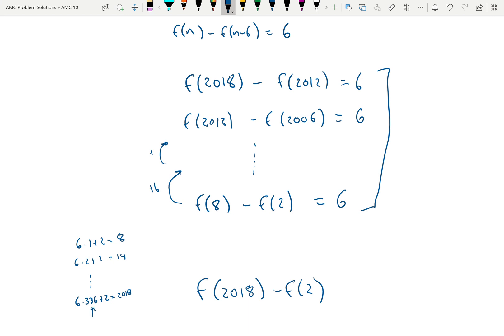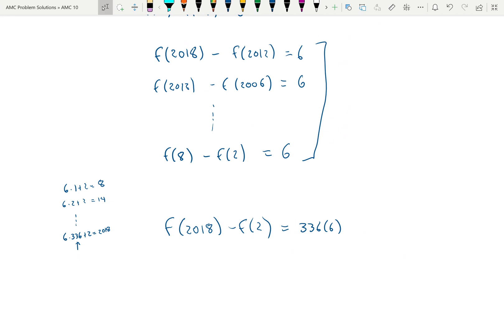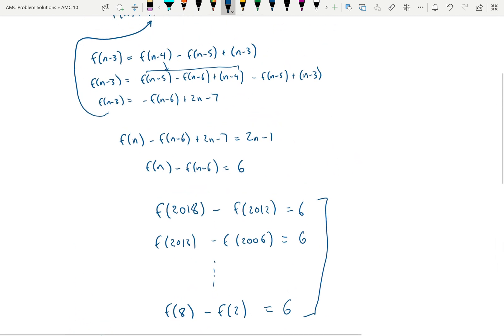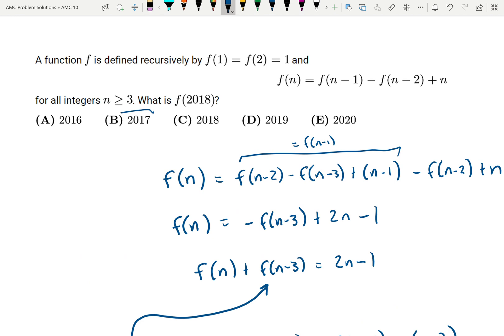And so this 336 is the number of equations that are here. So since there are 336 equations here, then this is going to be equal to 336 times 6. And we know that f(2018), we were told earlier that f(2) is 1, so minus 1. And 336 times 6 is 2016. So therefore, f(2018) is equal to 2017. So the answer is choice B.